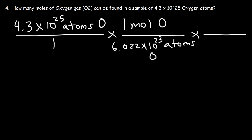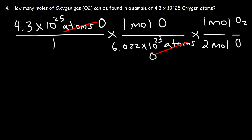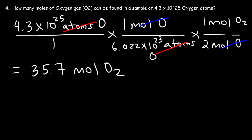Now we convert from O to O₂. There are 2 oxygen atoms per molecule, so there are 2 moles of oxygen atoms per 1 mole of O₂ molecules. The unit atoms of oxygen cancels, and moles of oxygen cancels as well. Dividing 4.3 times 10 to the 25 by 6.022 times 10 to the 23 gives 71.4, then dividing by 2 gives 35.7 moles of O₂.